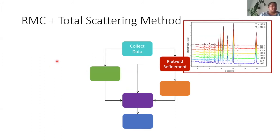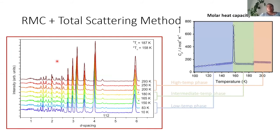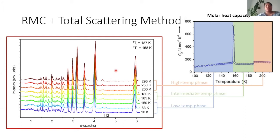So we collected the data. You still get Bragg peaks in a total scattering experiment and there's a lot of information that can be pulled from them. I collected data in all three phases: three measurements in the high temperature phase, three in the low temperature phase, and two sets in the intermediate temperature phase. From the Bragg peaks alone we can see that something is going on. As we get cooler, from red down to blue, peaks start moving towards the left, indicating a contraction in the unit cell. And in the low temperature phase, we see the emergence of an additional peak at 1,1,2 at around 4.5 Å d-spacing, which isn't present in the high or intermediate temperature phases.